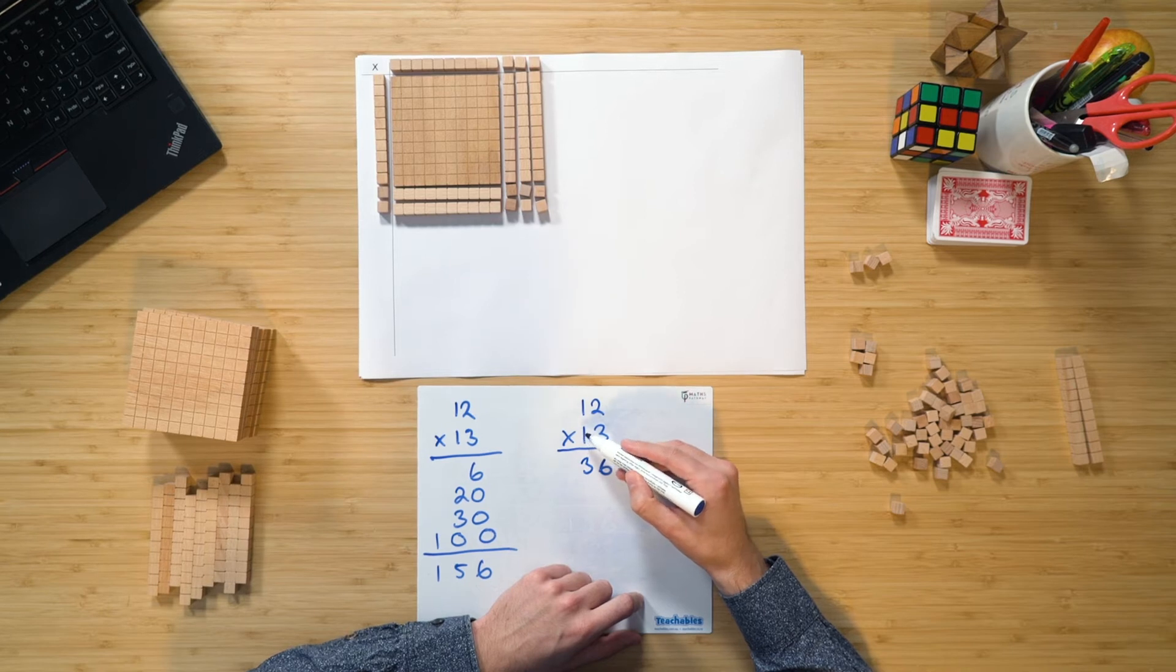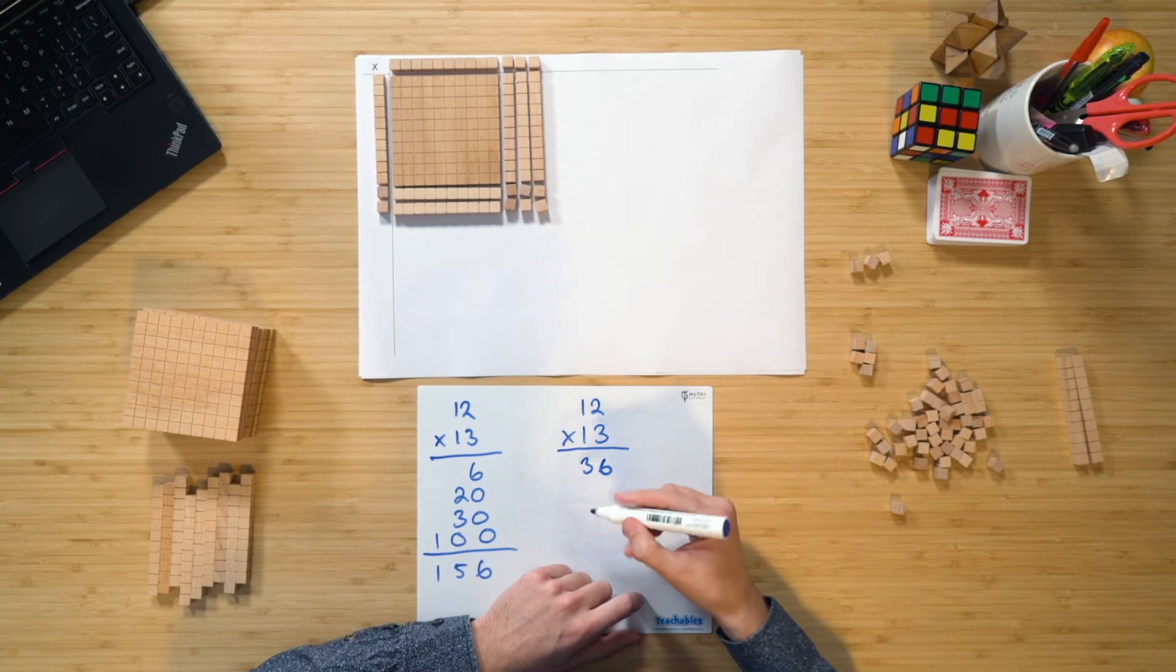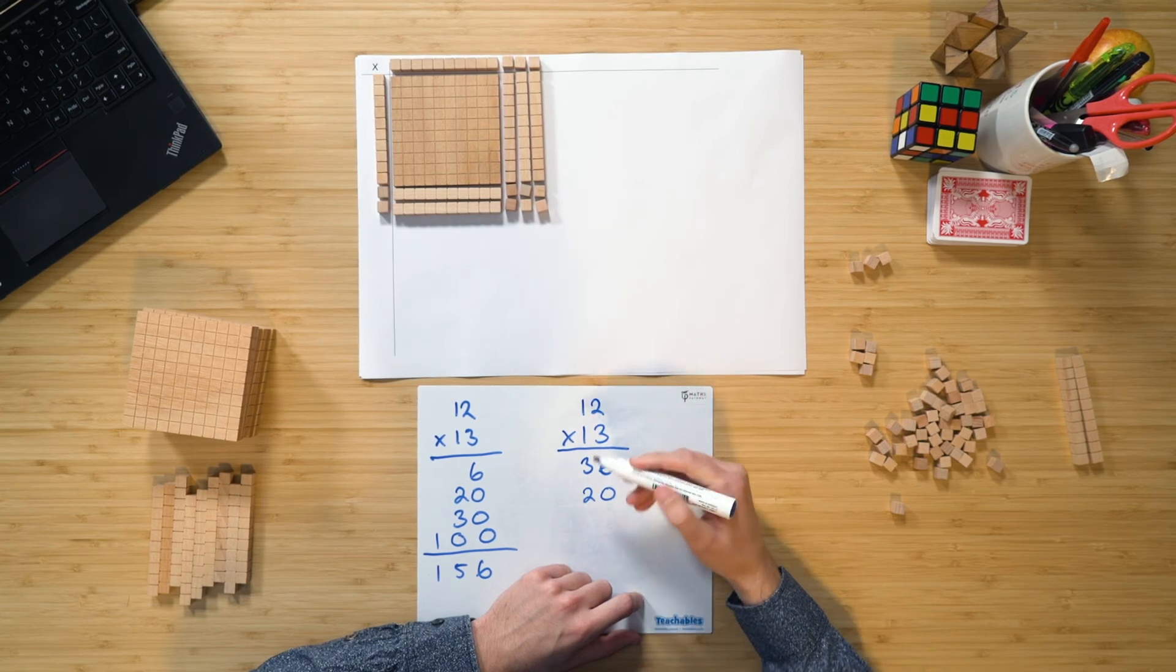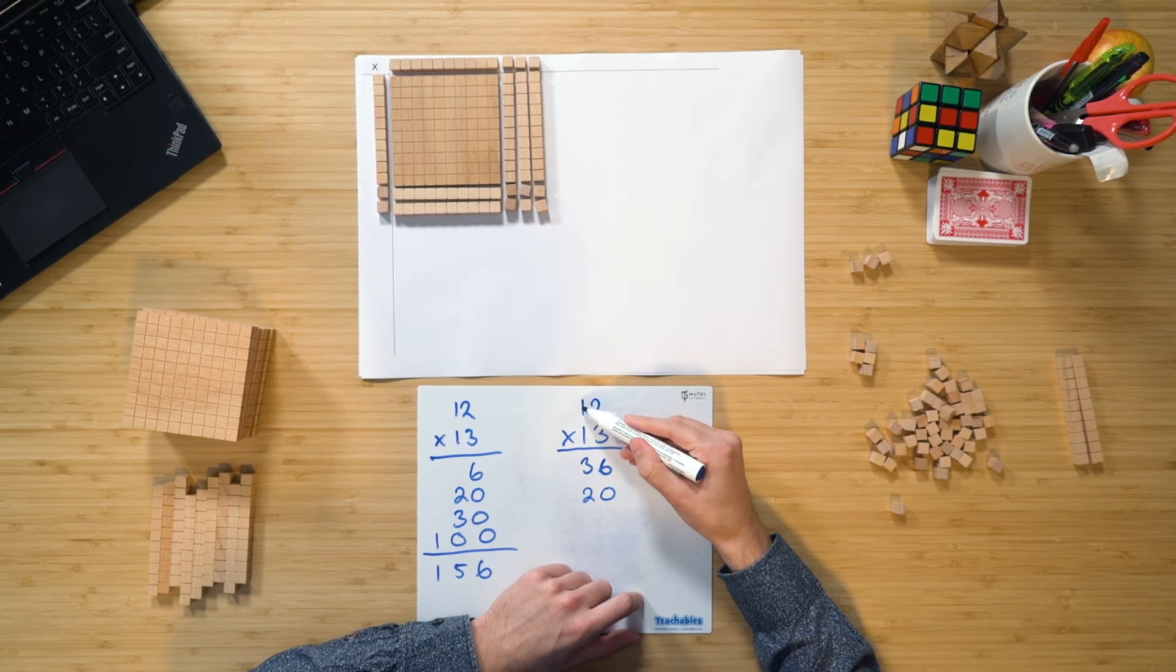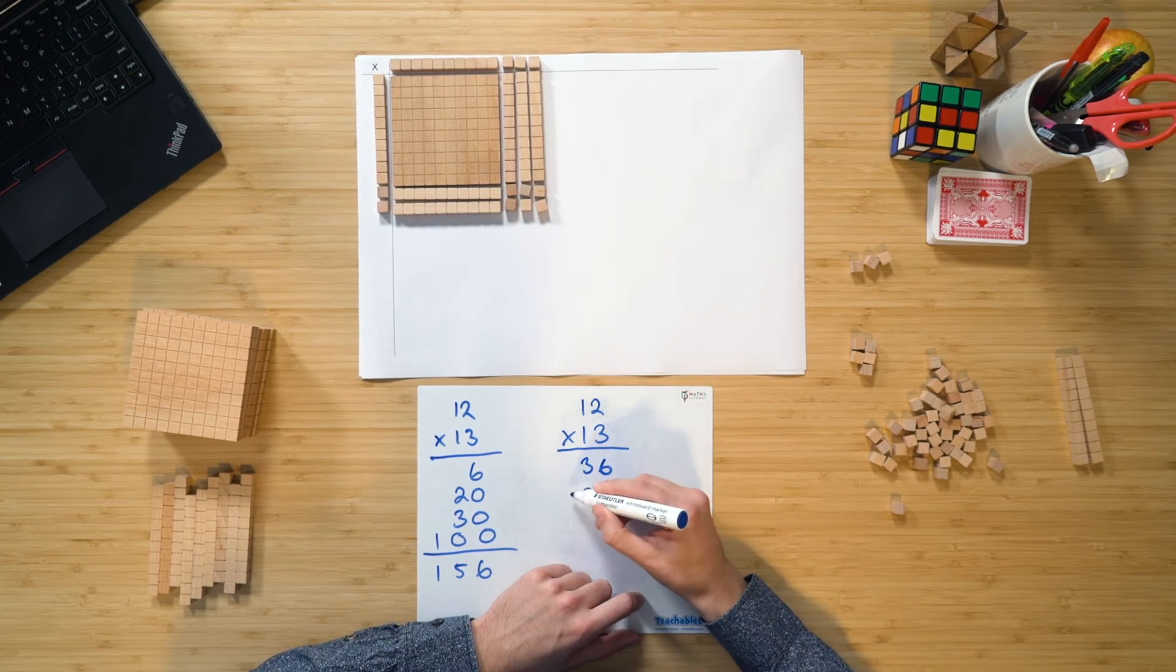Coming over to this one now, we have 1 10 multiplied by 2. Well, that's going to be 20. And we have 1 10 multiplied by 10, which we know is 100. So we just go 100 plus 20 was 120.